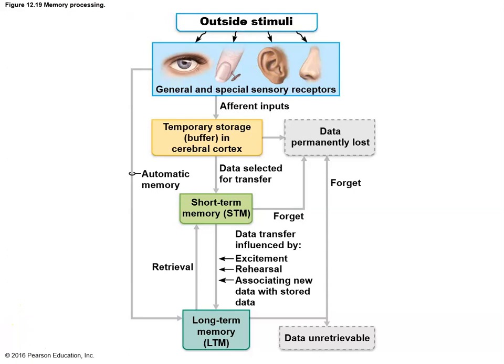A fourth category is automatic memory — a somewhat mysterious process where some things automatically go from perception to long-term memory with no short-term processing and no particular technique involved. Sometimes we know or remember things and can't even recall where they came from, which is probably an example of automatic memory occurring without conscious awareness.